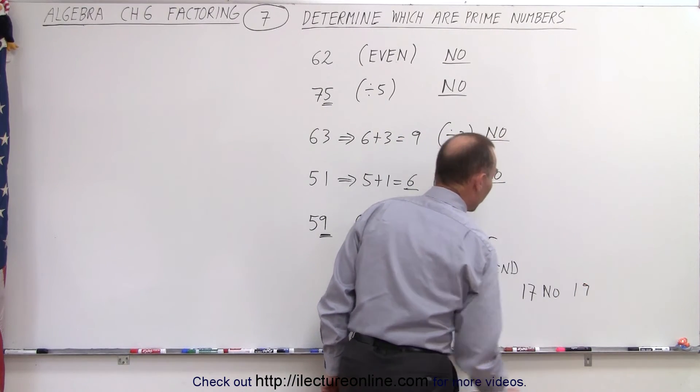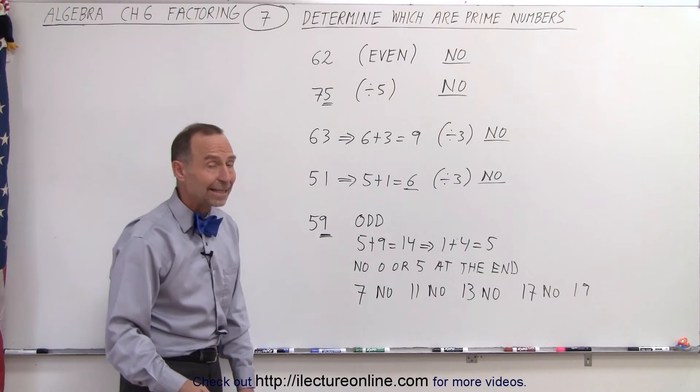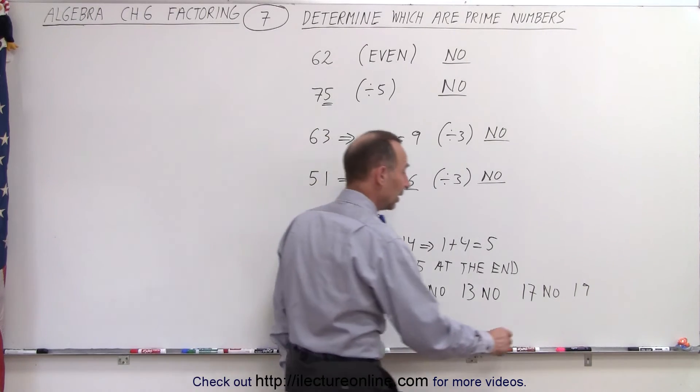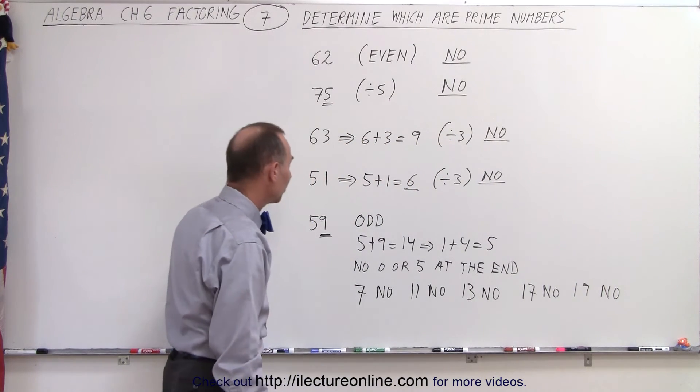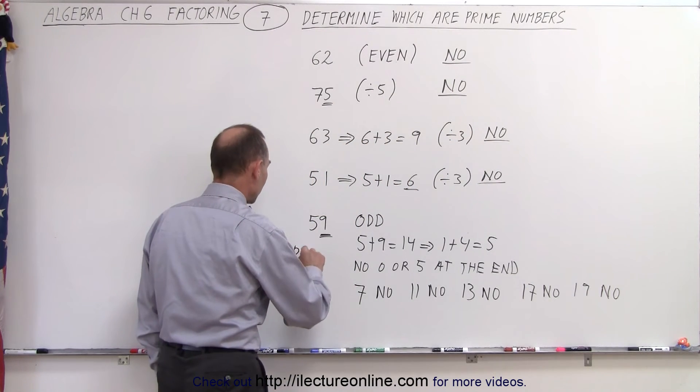19 times 3 is 57, so that doesn't work. And you can see that very quickly we're running out of the numbers, so I would say this is a prime number.